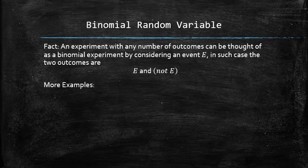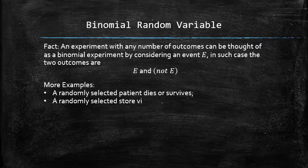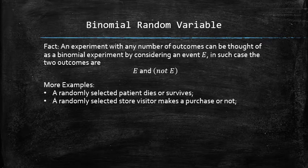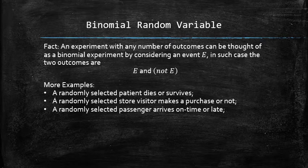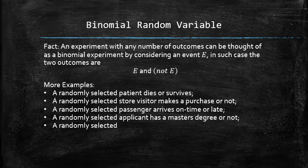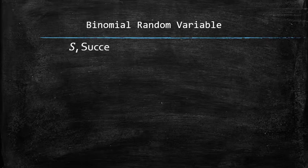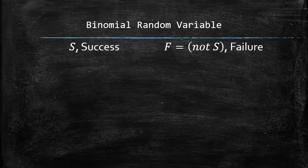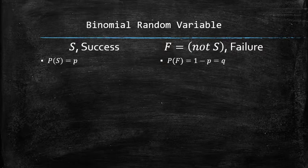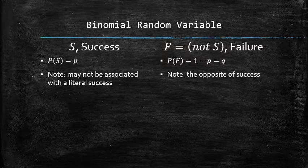There are many other examples of binomial experiments: a randomly selected patient either dies or survives, a store visitor either makes a purchase or not, a passenger either arrives on time or late, an applicant has a master's degree or not, and a student graduates in four years or not. For a binomial experiment, we label one outcome as a success and the other as a failure. The probability of success is labeled P, and the probability of failure is labeled Q, computed as 1 minus P.